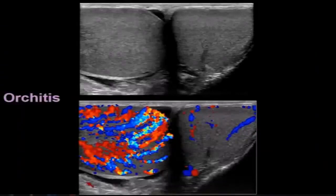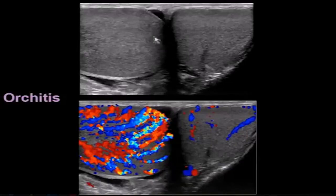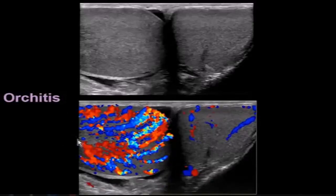Here's a patient with orchitis. On the side-by-side view of the left and right testicle, the right testicle is mildly enlarged. The echogenicity is pretty homogeneous but not quite as smooth as the left. When we put color flow on, we can see marked increased blood flow inside the involved testicle as compared to the normal left side — look at all those vessels traveling across the inflamed testicle.